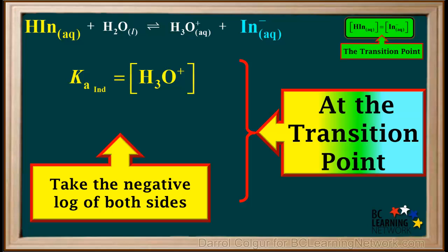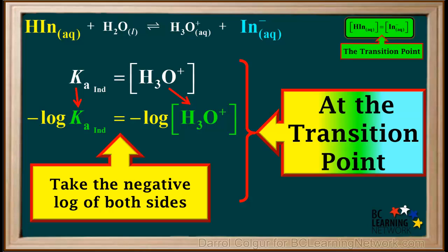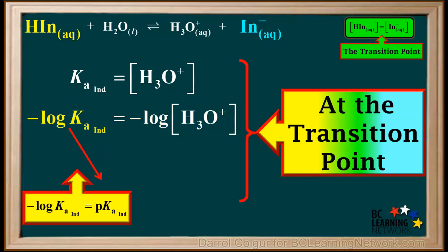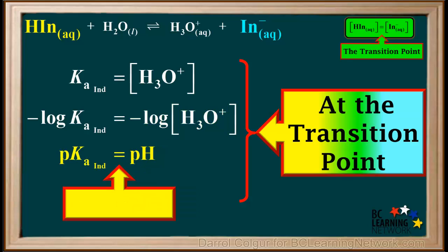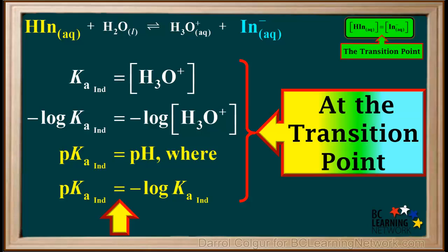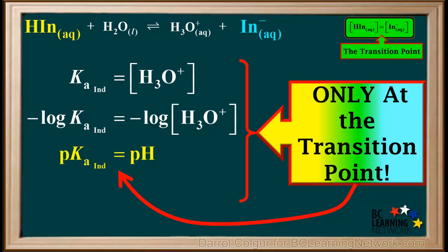At this point, we'll take the negative log of both sides of this equation. So we can say that the negative log of Ka of the indicator is equal to the negative log of the hydronium ion concentration. The negative log of Ka is called pKa, so we'll write pKa of the indicator here. And of course, the negative log of the hydronium ion concentration is equal to the pH. So we substitute pH, and we get the equation that at its transition point, the pKa of the indicator is equal to the pH, where pKa is defined as the negative log of the Ka of the indicator. Remember that the pKa of the indicator equals the pH only at the transition point and at no other pH.